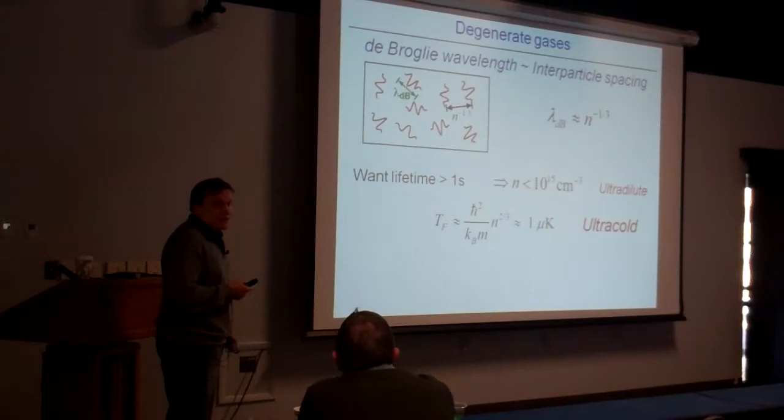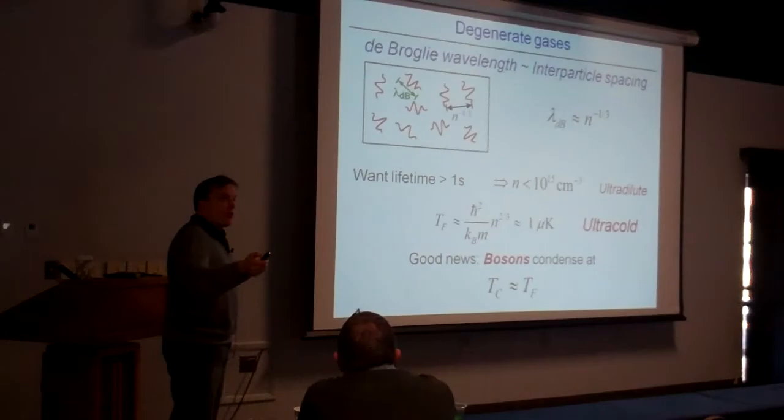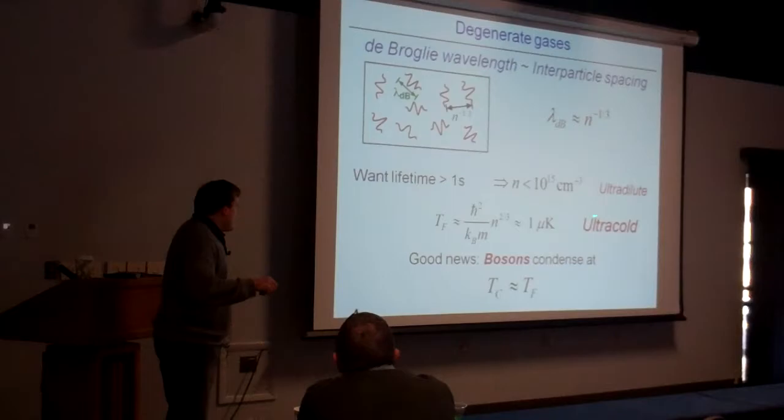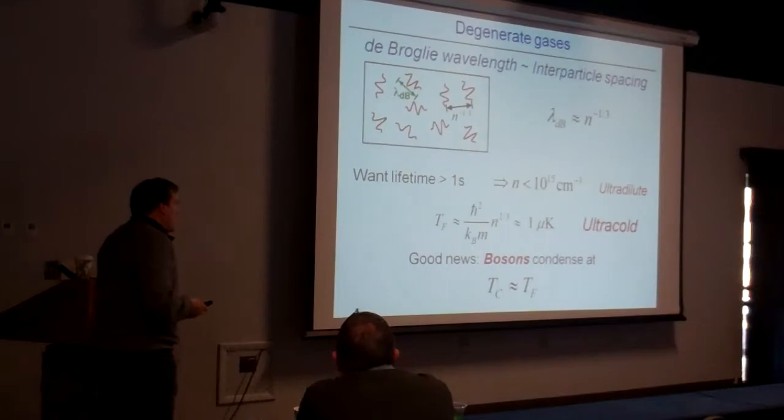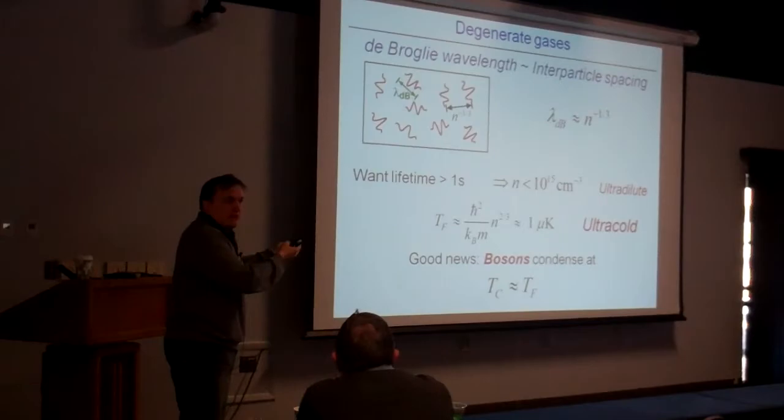The good news is that once we do that and work with a Bose gas like sodium-23 — which is a boson — they already condense. Once you have reached this degenerate regime, once these waves start to overlap and touch each other, the particles lose their identity and all want to go into one big quantum mechanical wave: that's Bose-Einstein condensation. Bosons — not so bad.